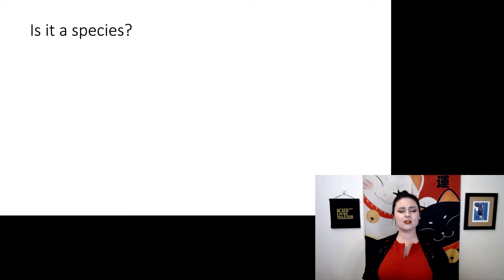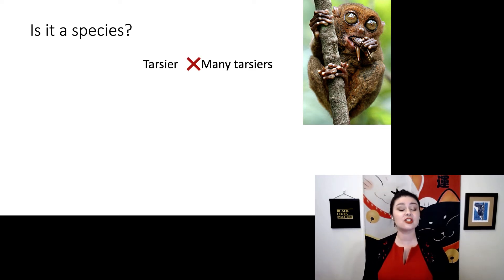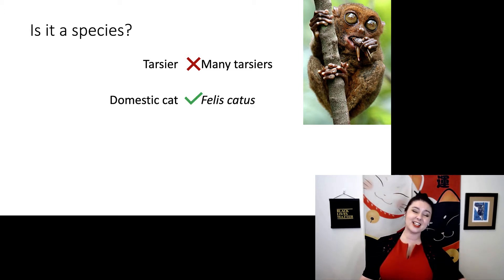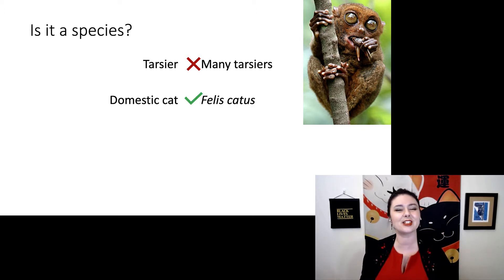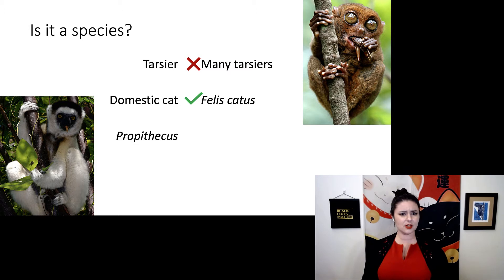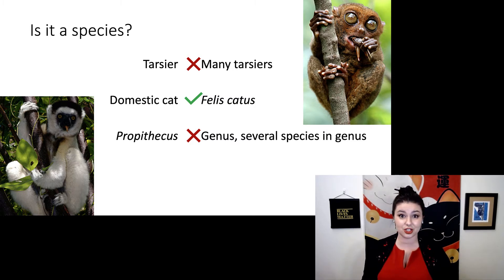Let's look at a couple of examples. Tarsier — is that a species? Not quite. There are actually many different species of tarsiers. Domestic cat? Yes, that is a species. Its scientific name is Felis catus — kind of a silly one. How about Propithecus? You'll notice it looks a little similar to the previous formatting, but this is actually a genus. There are multiple species within this genus.